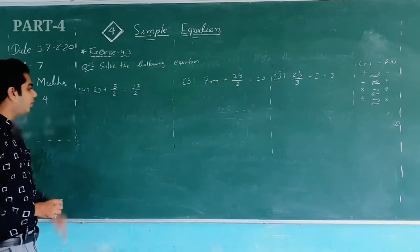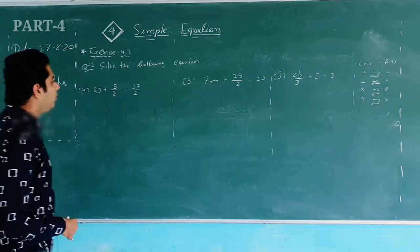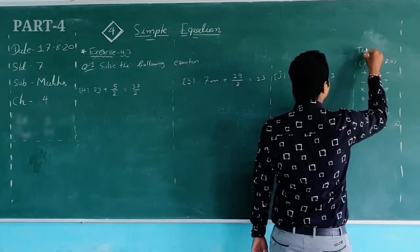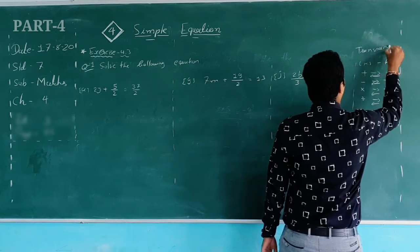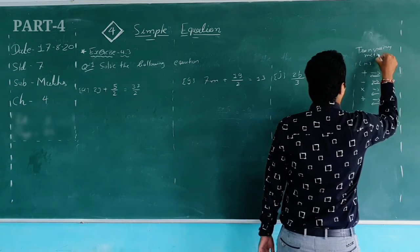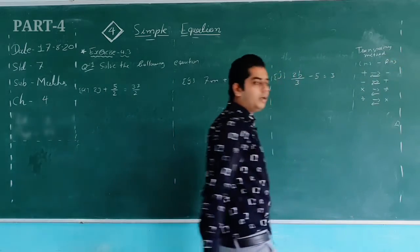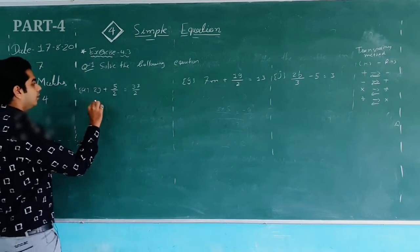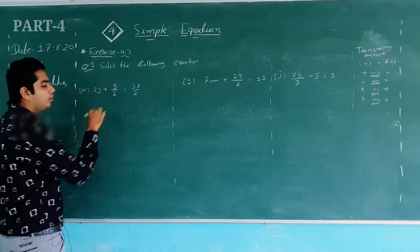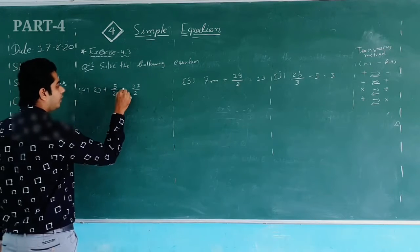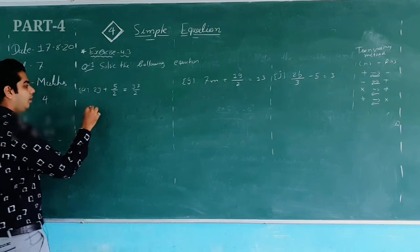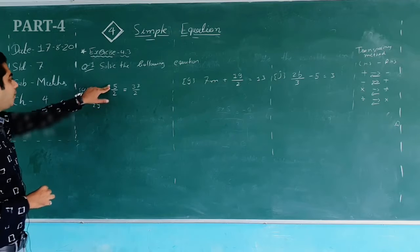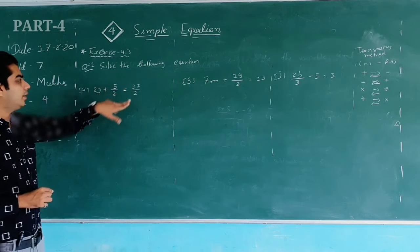For the first question I will use the transposing method. The law of the transposing method is: transpose or shift values from one side to another side of the equals sign.